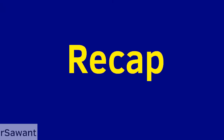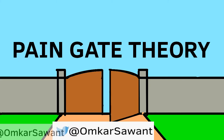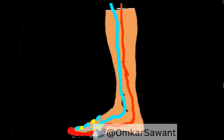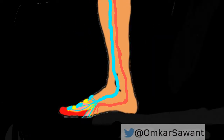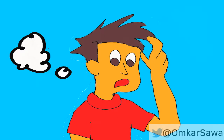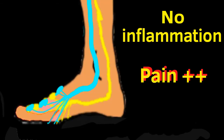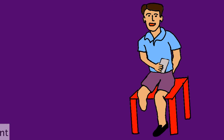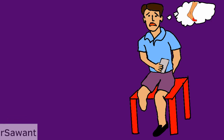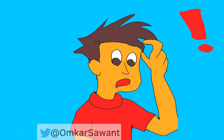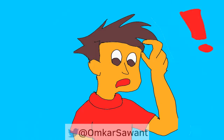As explained before, pain gate theory was a brilliant theory to explain the pain arising from inflamed tissues and joints. How about pain experienced when there is no active inflammation? Amputees without their limbs could still experience pain arising from that limb. What could be the explanation for this?